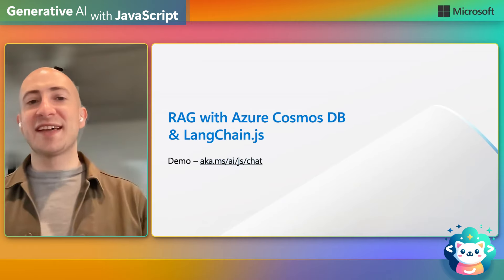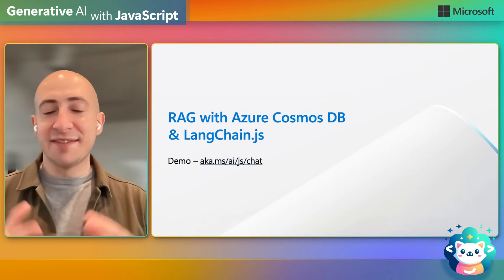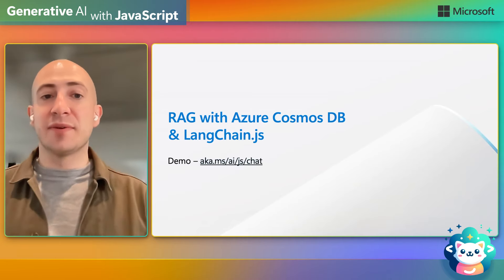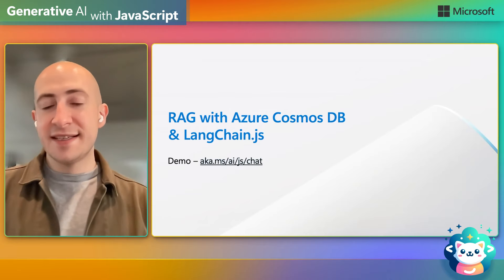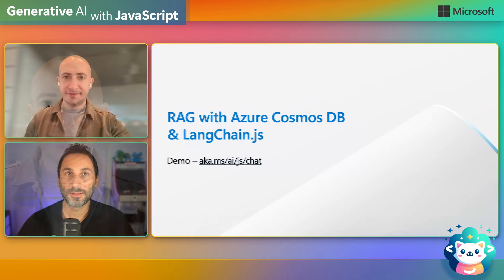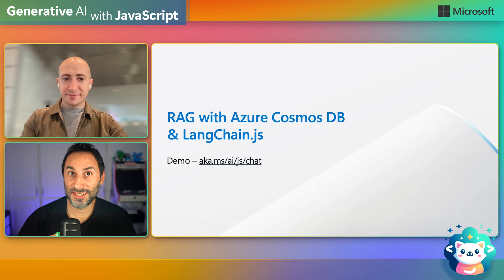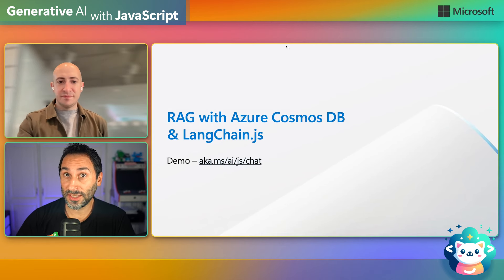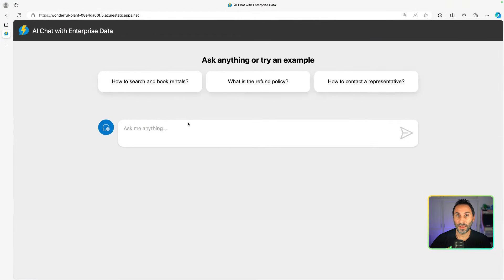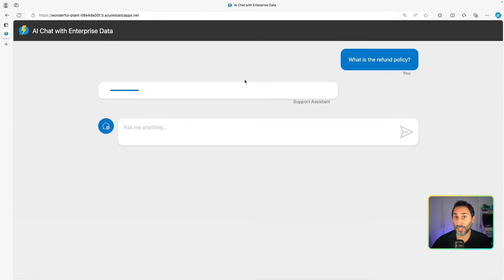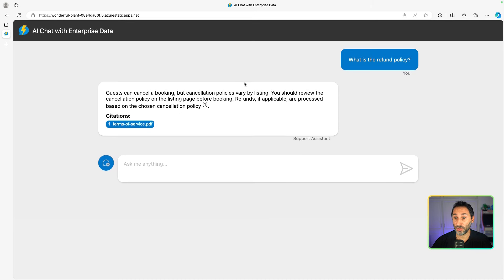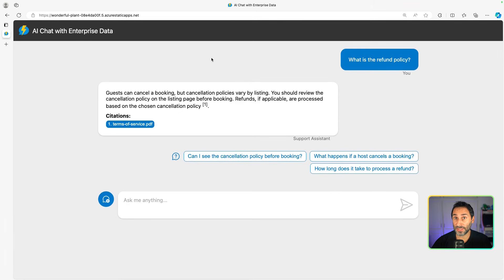Now let's take a look at what that looks like in JavaScript with LangChain.js. Thank you James for all those details. Let's have a look at a practical example of using Azure Cosmos DB for a RAG application. You may have already seen this support chat application built in the previous videos — here we're asking support questions and all the answers come from PDF data that was ingested and vectorized in Cosmos DB. Let's take a quick look at how we implemented this.